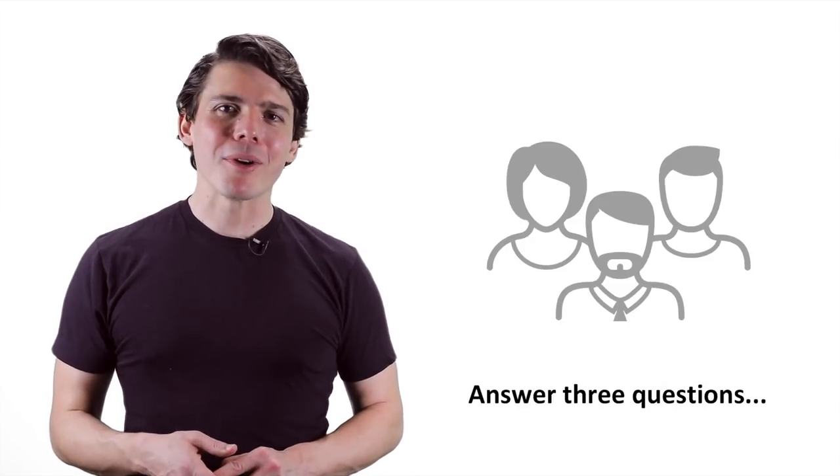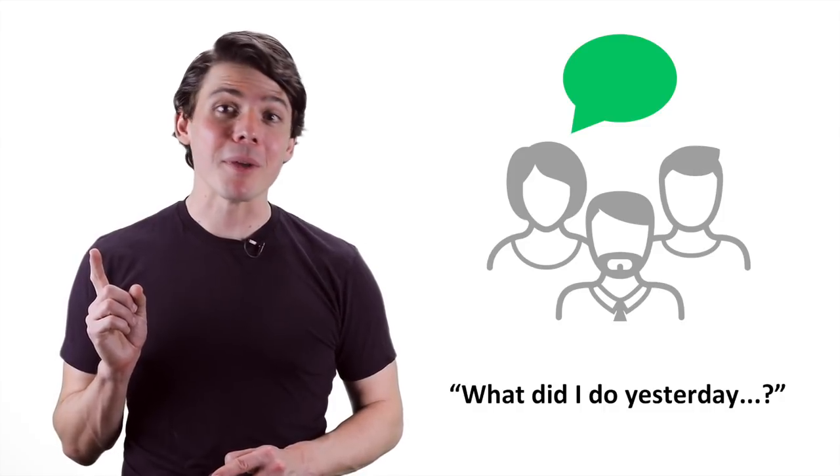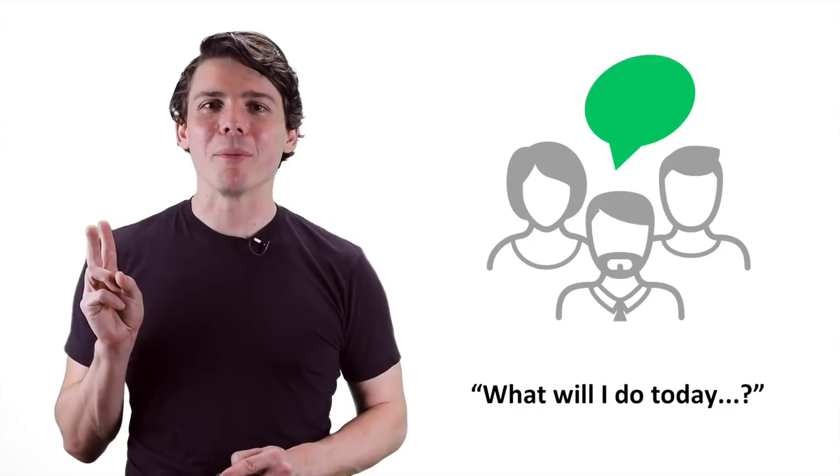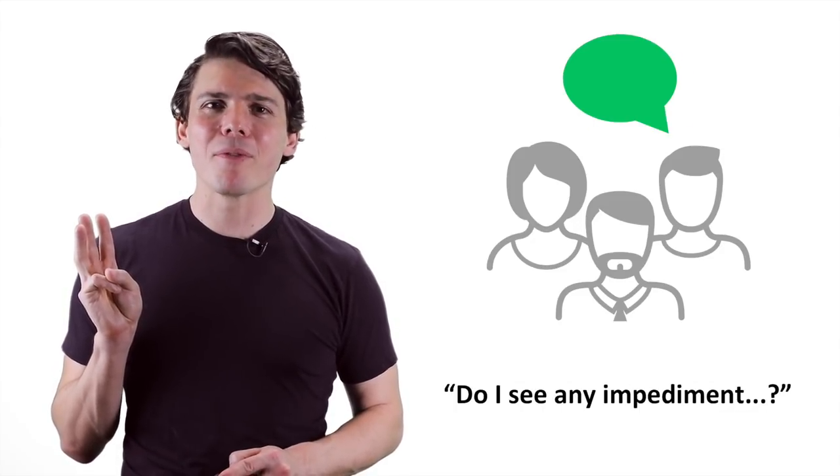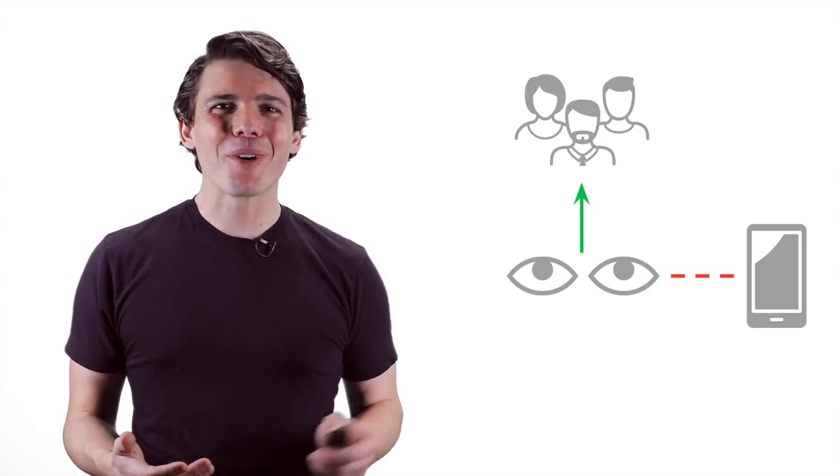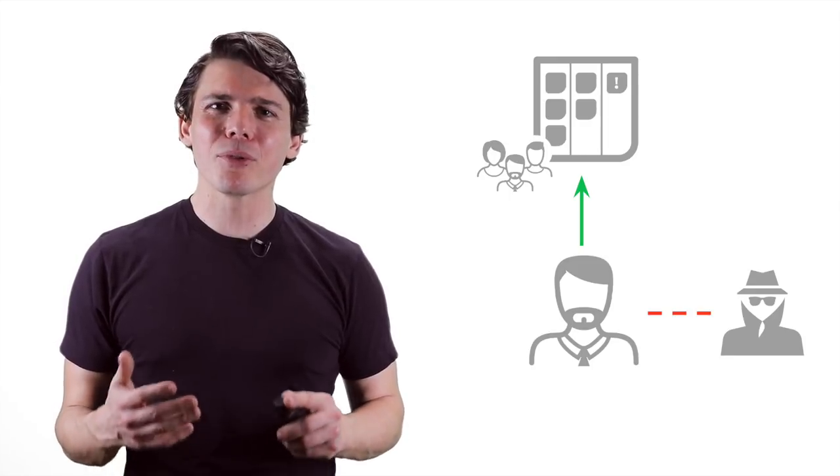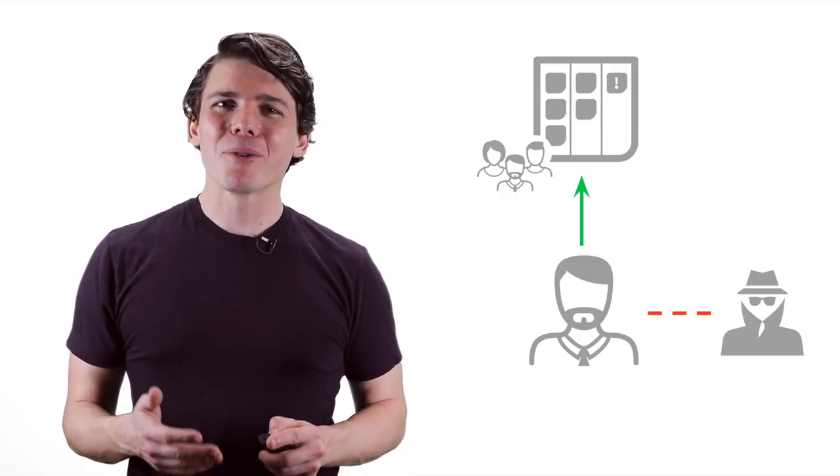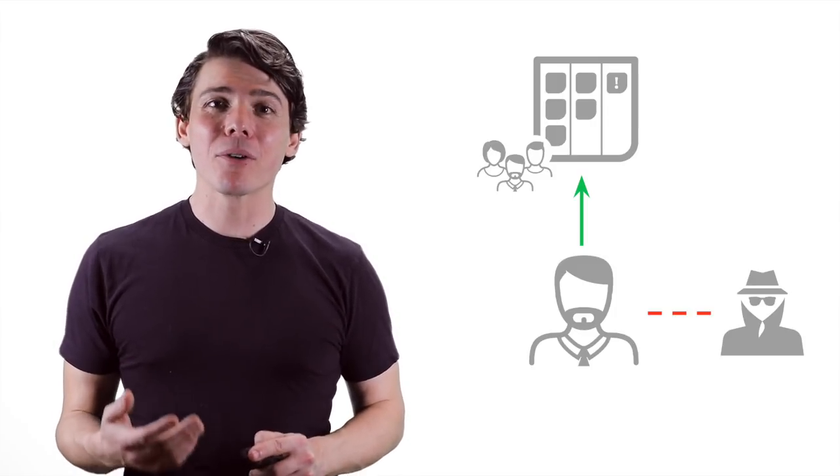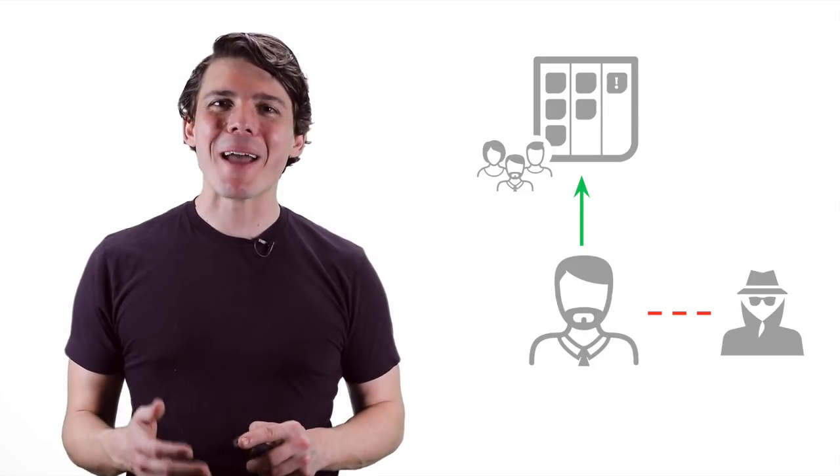Next, each development team member answers three questions right from the scrum guide as concisely as possible. What did I do yesterday that helped the development team meet the sprint goal? What will I do today to help the development team meet the sprint goal? And do I see any impediments that prevent me or the development team from meeting the sprint goal? As a member of the development team is speaking, watch out for the following. First, is everyone else looking directly at the person speaking and paying full attention? It can be a fun game for the speaker to look for anyone who isn't paying attention and nominate them as the next speaker. Second, are they speaking directly to tasks that are visible to the whole team on the board or are they working on something else? I once had a mentor who told me that we should consider any effort towards work not on the board as an act of sedition because it deeply impacts the product owner's ability to support the team and saps the team of velocity made good against the sprint goal.